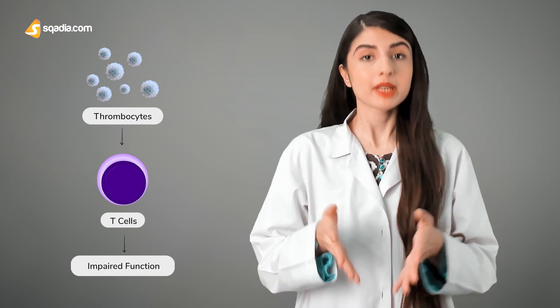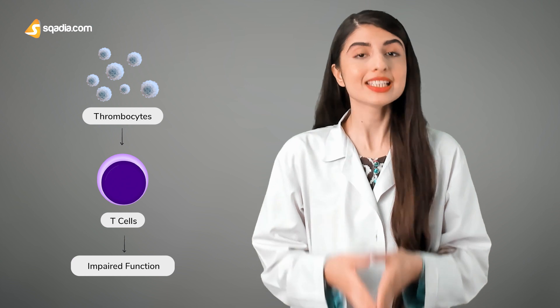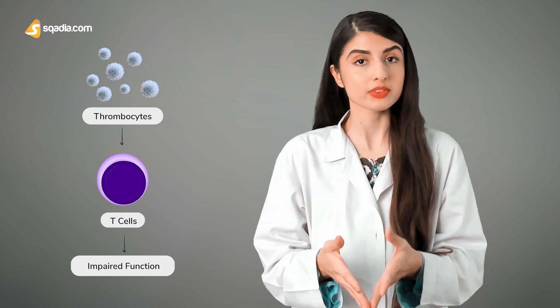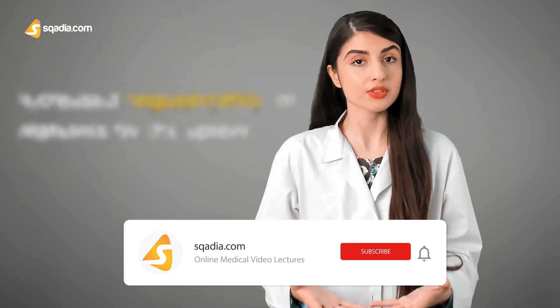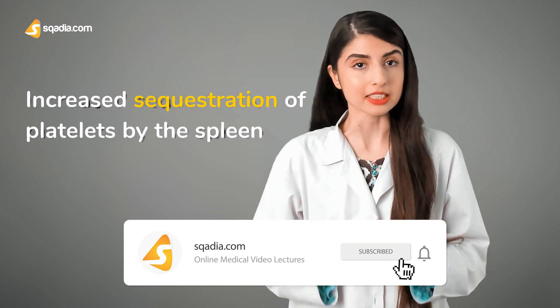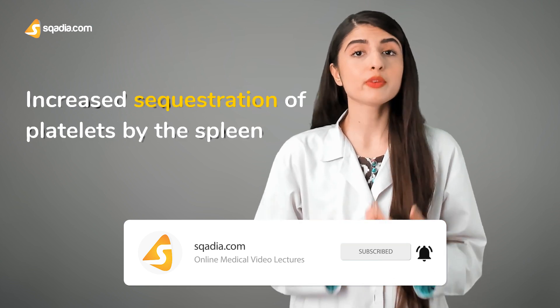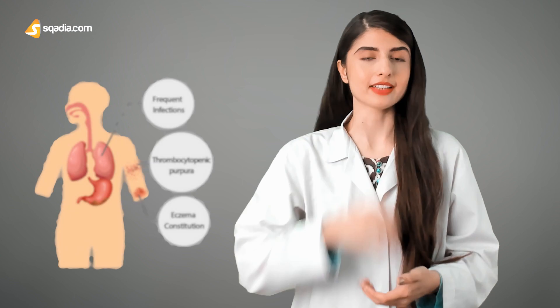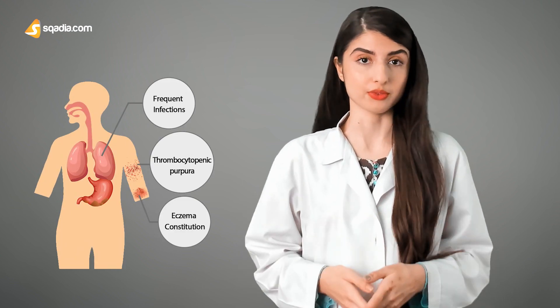The impairment of cytoskeleton of immune cells will lead to loss of function of these immune cells and increased sequestration of platelets by the spleen. As a result, we will observe the clinical triad that is characteristic of Wiskott-Aldrich syndrome.